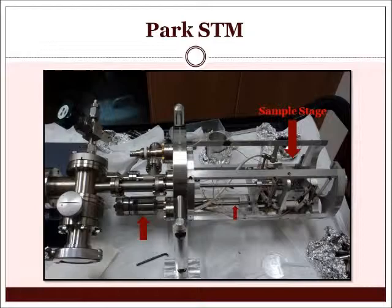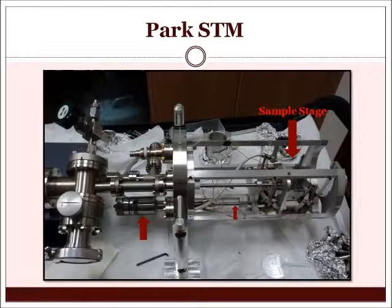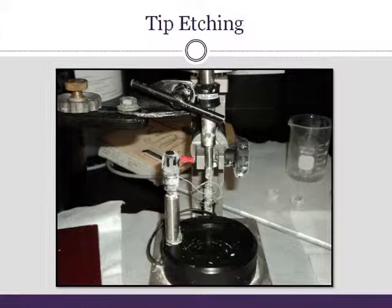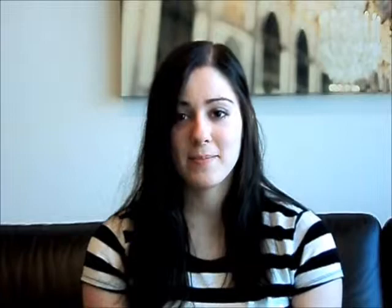I also etched tips for probing the sample in the STM using tungsten wire and a sodium hydroxide solution. A current is passed through the loops with a sodium hydroxide film to oxidize the tungsten at the top loop and etch two atomically sharp tips. The second part of the project was performing STM, STEM, and STS on nanostructured materials obtained through existing collaborations.